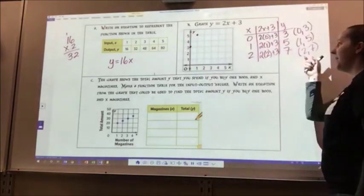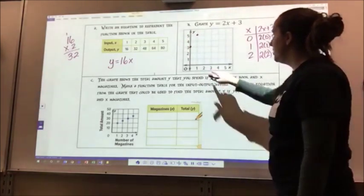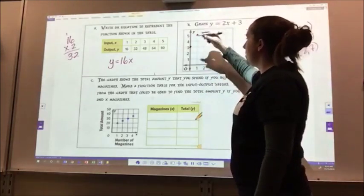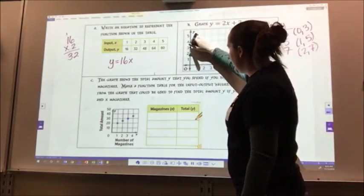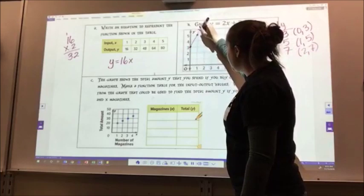My third point is 2, 7. Well, 2, 7 is off. So I can stop, and then I connect my dots to form a line.